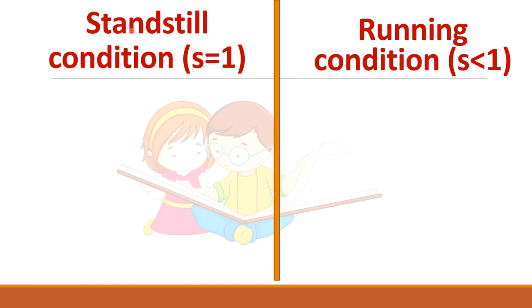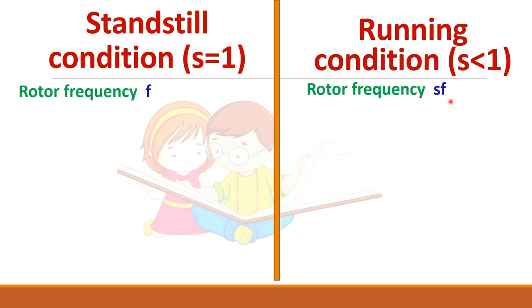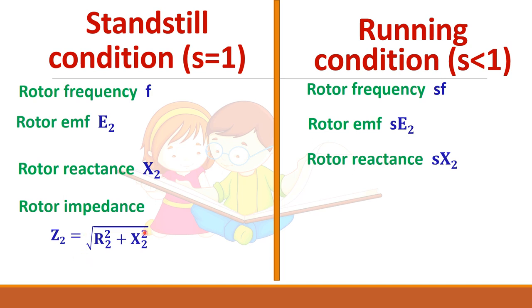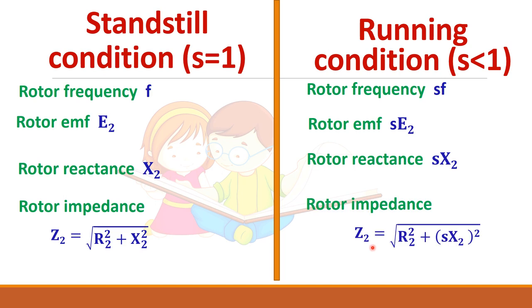The difference between standstill and running conditions: rotor frequency is f at standstill and S×f under running condition. The rotor EMF is E2 at standstill and S×E2 under running condition. The reactance is X2 at standstill and S×X2 under running condition. The impedance Z2 = √(R2² + X2²) at standstill, and √(R2² + (SX2)²) under running condition, since reactance is 2πfL, so f is replaced by Sf.